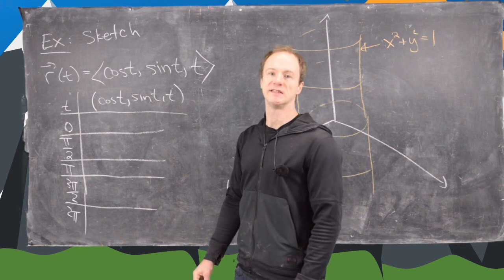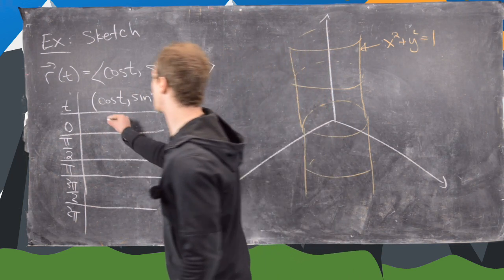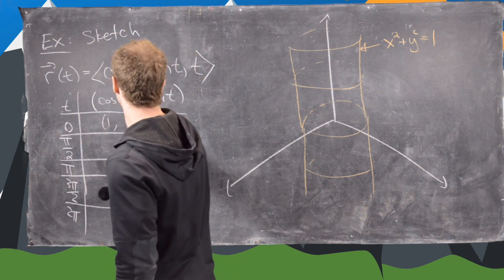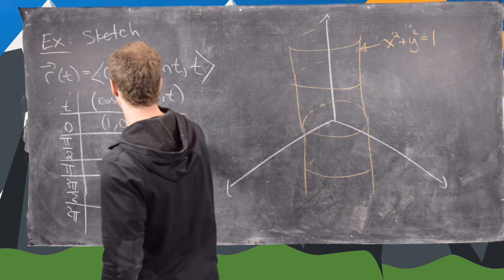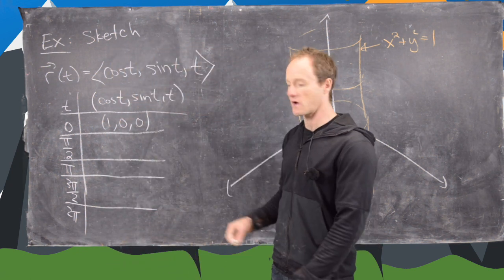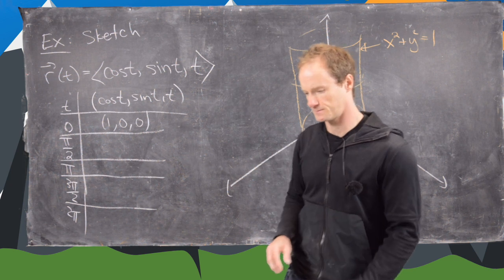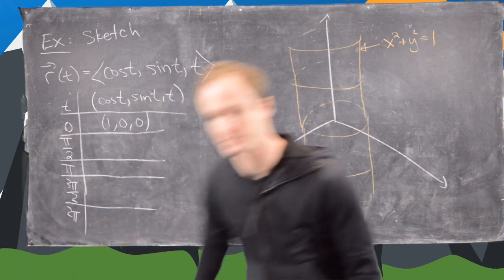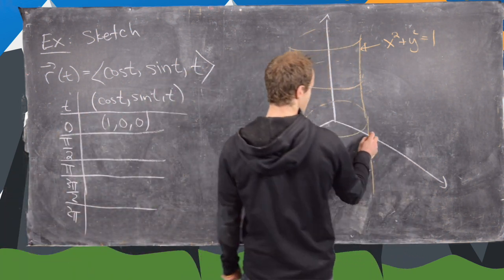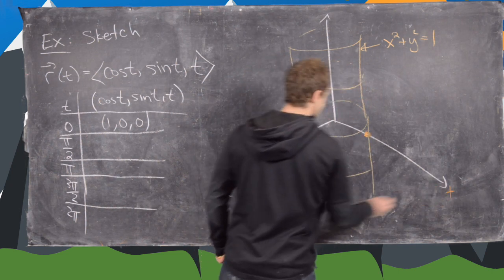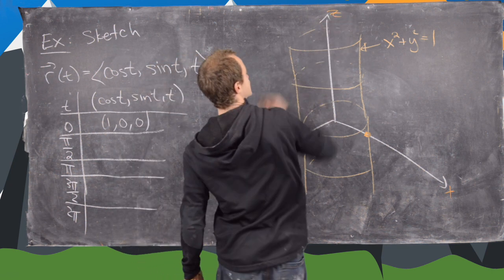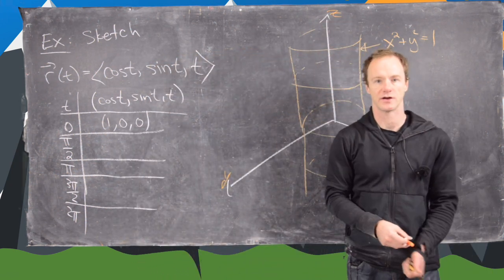So let's see. If we plug 0 into this, we'll get 1 for cosine. For sine, we're going to get 0. And then obviously if t equals 0, then we get 0. So we're along the x-axis like that. So that's this point right here. So recall that this is the x-axis, this is the y-axis, and up here this is the z-axis.